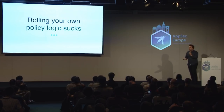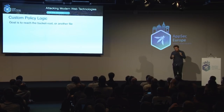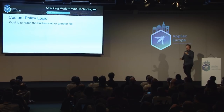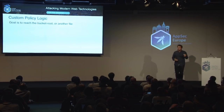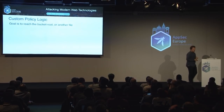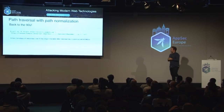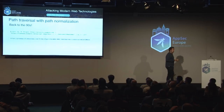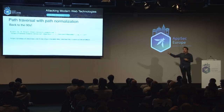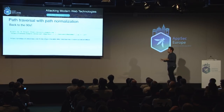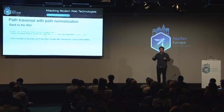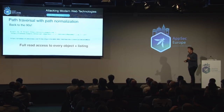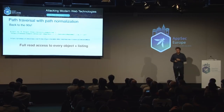Custom policies suck — rolling your own policy logic is such a bad environment. The goal is to get a signed URL to the root of the bucket, which gives you the file listing. One example: providing path traversal input — this is back to the 90s — and the server would normalize the URL and give back a signed URL to the root folder of the bucket. Full read access to every object plus object listing.